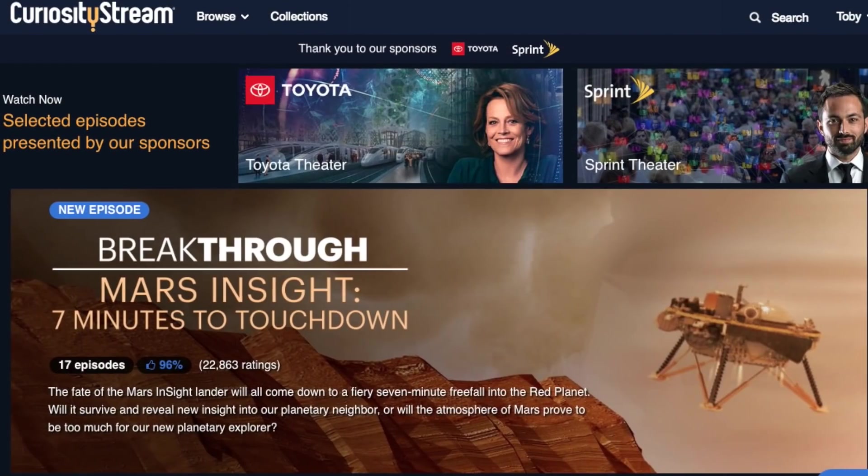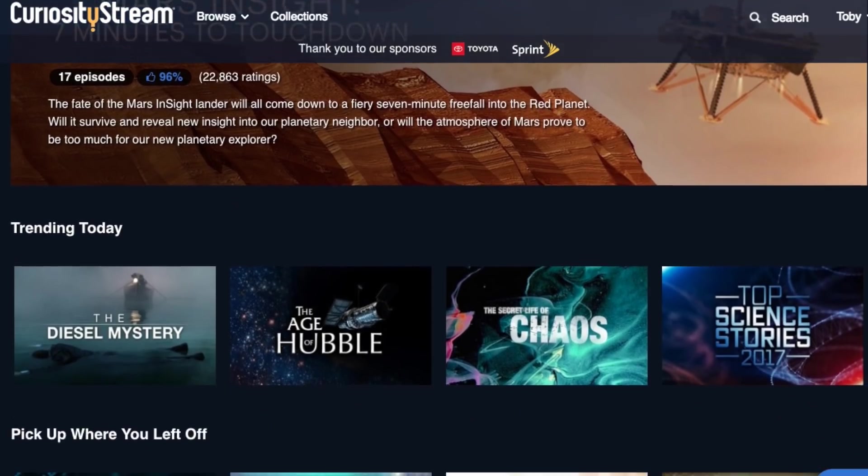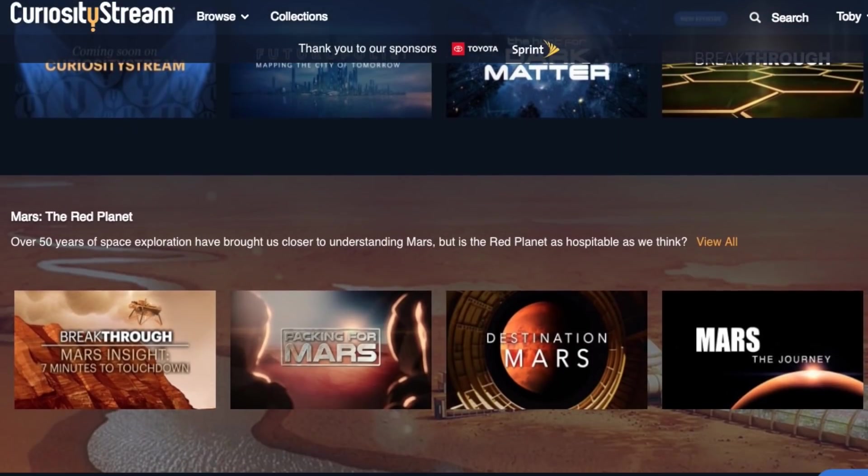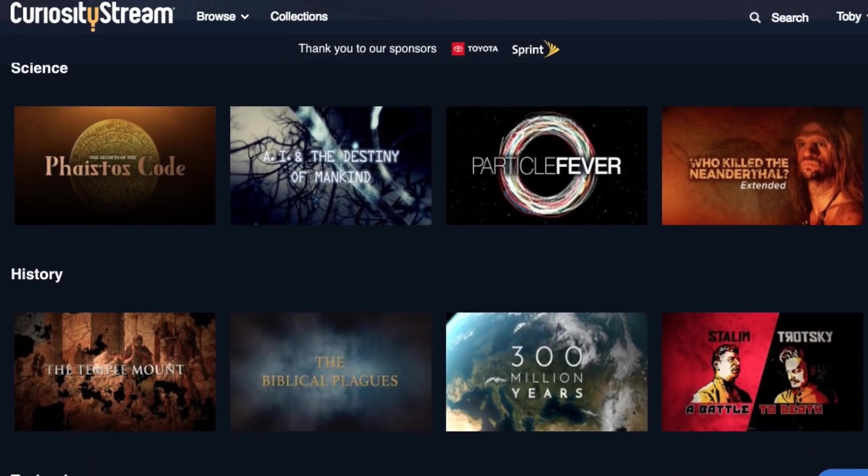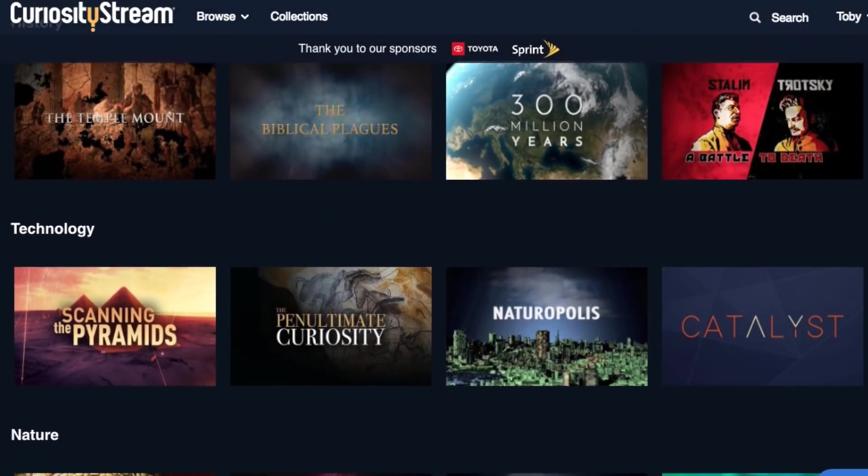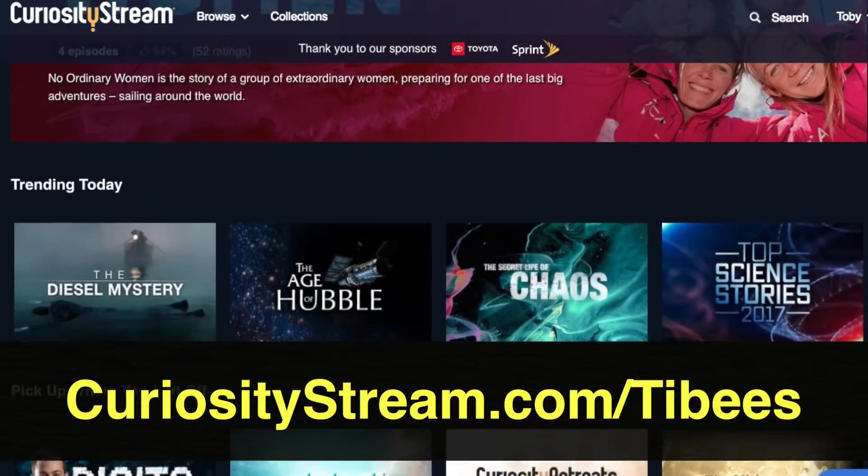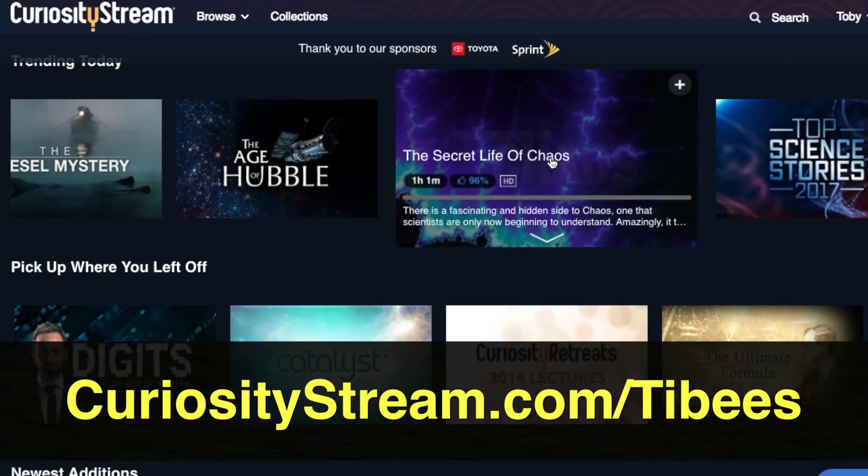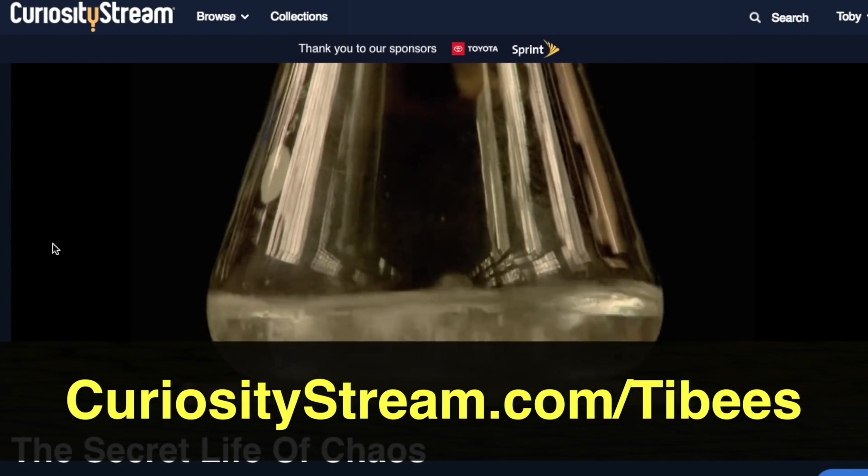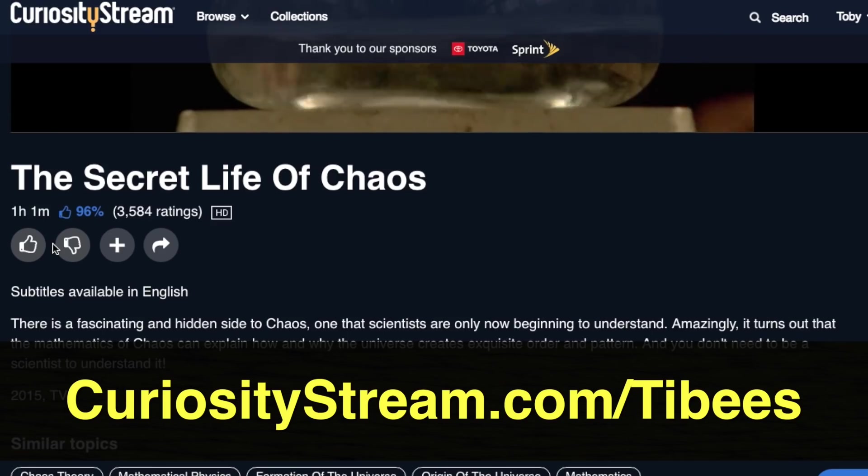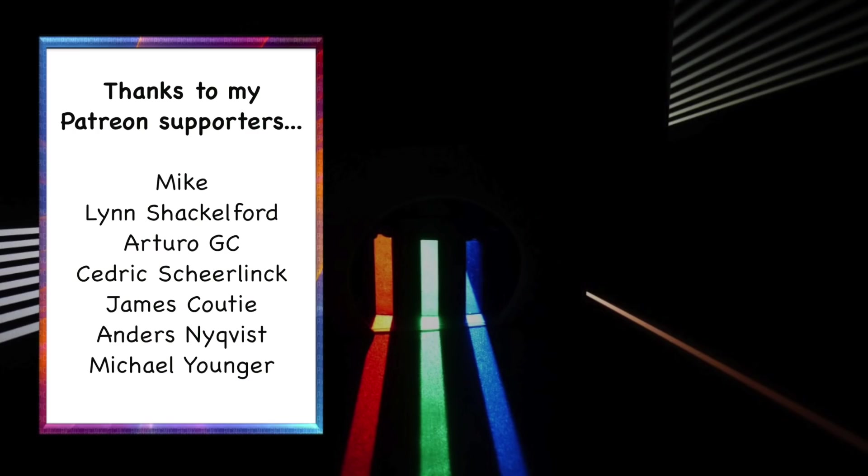I'd like to thank CuriosityStream for sponsoring this video. CuriosityStream are a subscription streaming service that offers over 2000 documentaries and nonfiction titles from some of the world's best filmmakers, including some exclusive originals. You can get unlimited access starting at just $2.99 a month. Or for my audience, the first 30 days are completely free if you sign up at curiositystream.com slash tibbies and use the promo code tibbies during the sign up process. I'm really looking forward to watching The Secret Life of Chaos. It explores the mathematics of chaos theory and how it can explain why the universe creates order and pattern. Thanks CuriosityStream. Also, thank you to my patrons who support me on Patreon. And thank you for watching.